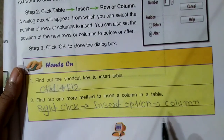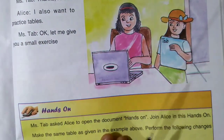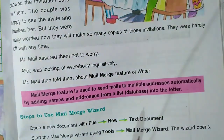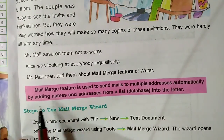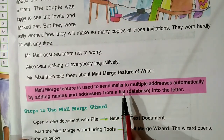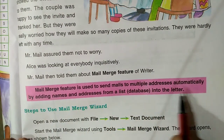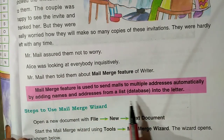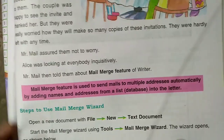Right-click, then Insert option, then Column. Now, the next thing is Mail Merge. The Mail Merge feature is used to send mails to multiple addresses automatically by adding names and addresses from a list into the letter.